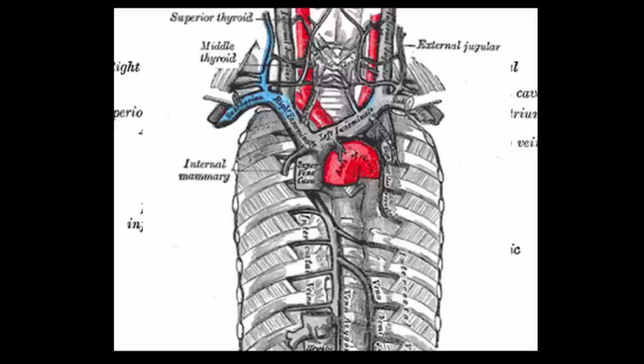As it then progresses into the chest, it's joined by the internal jugular. This is the internal jugular, and the combination of those then forms the brachiocephalic or right innominate. It then takes a major branch coming in, which has got the thyroid veins.